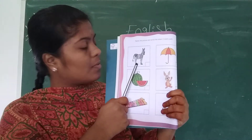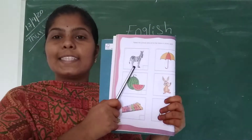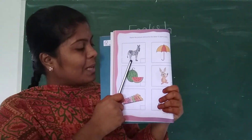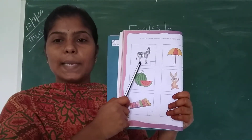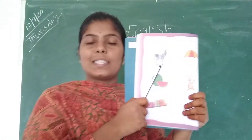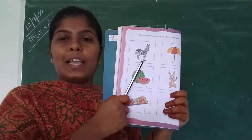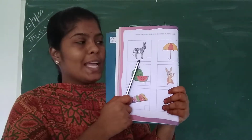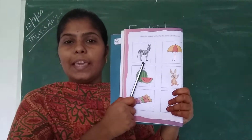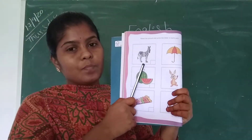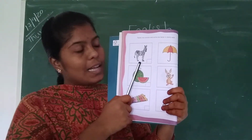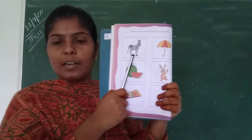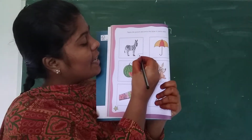What is this picture? It is an animal. What is the animal name? It is zebra. What is the spelling of zebra? Z-E-B-A-R. What is the starting letter of zebra? Z. Write Z here.